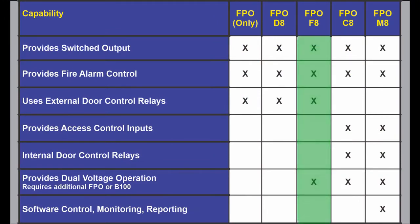You can use the FPO B100 F8 combination in a situation where you are using the access control system relays to control the doors and you have 16 doors. Again, 14 of them are strikes, two of them are mag locks, but in this case some are 12 volts, some are 24 volts, some strikes are fail safe, some are fail secure. You can use an FPO with two F8s.